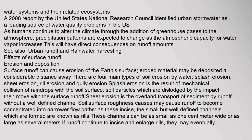Surface runoff can cause erosion of the earth's surface, and eroded material may be deposited a considerable distance away. There are four main types of soil erosion by water: splash erosion, sheet erosion, rill erosion, and gully erosion. Splash erosion is the result of mechanical collision of raindrops with the soil surface; dislodged soil particles then move with the surface runoff. Sheet erosion is the overland transport of sediment by runoff without a well-defined channel. Soil surface roughness may cause runoff to become concentrated into narrower flow paths, forming small but well-defined channels known as rills.